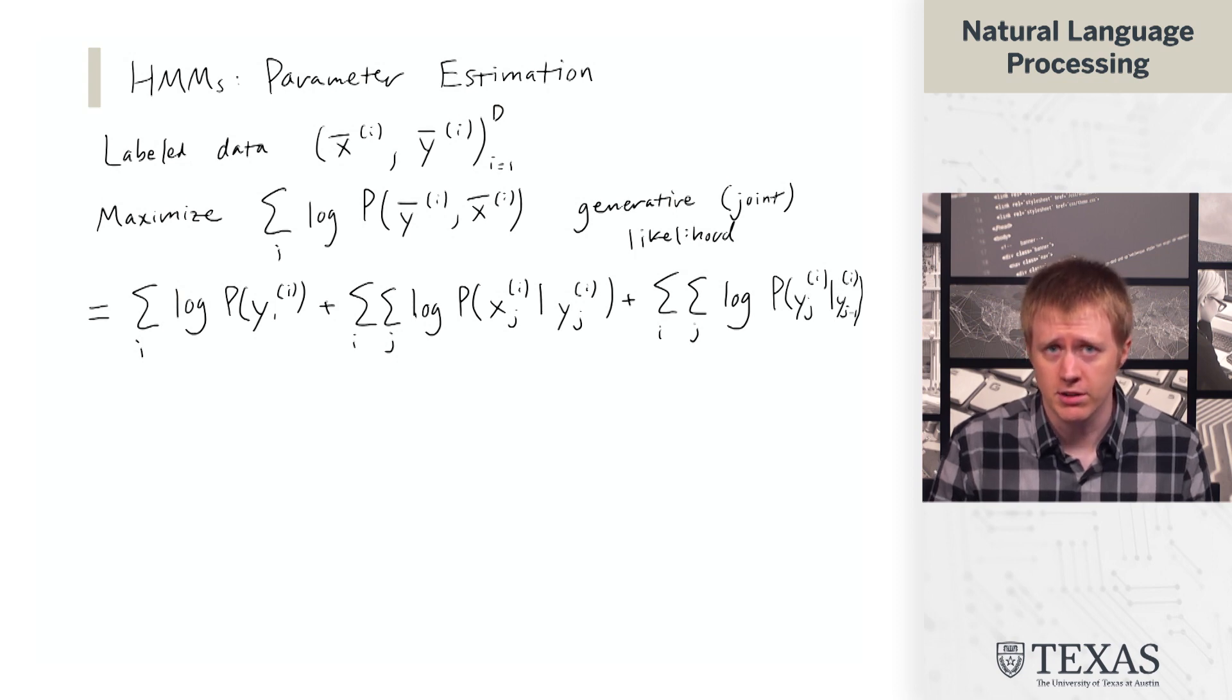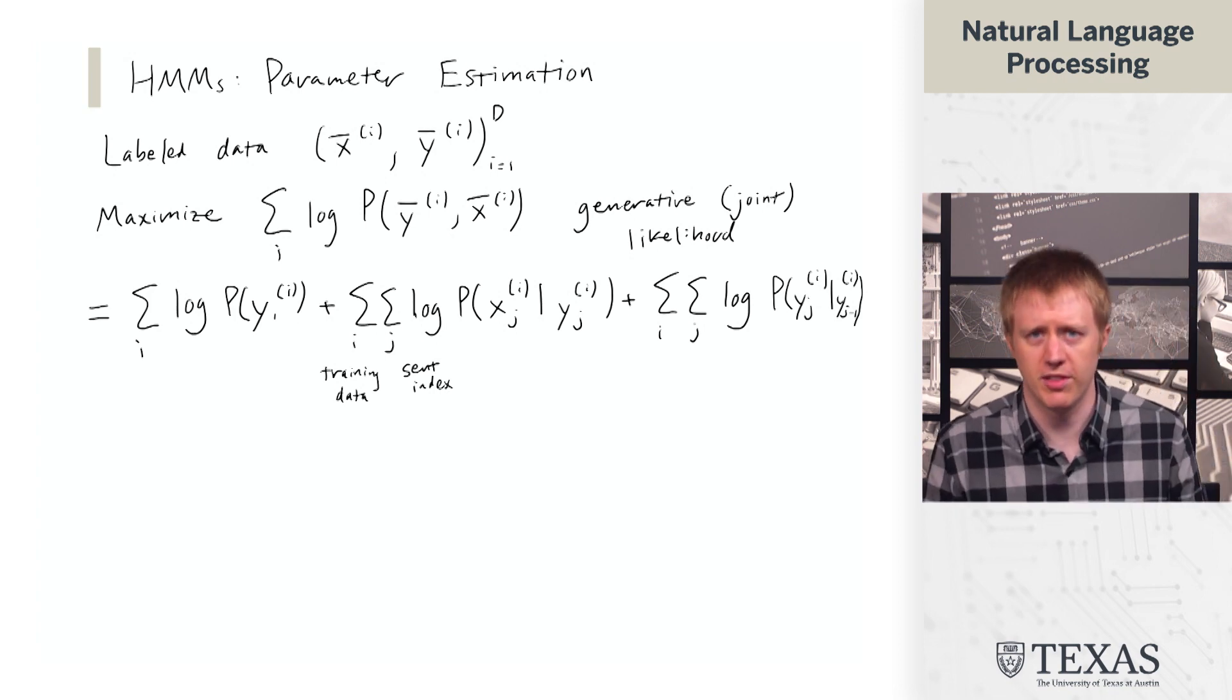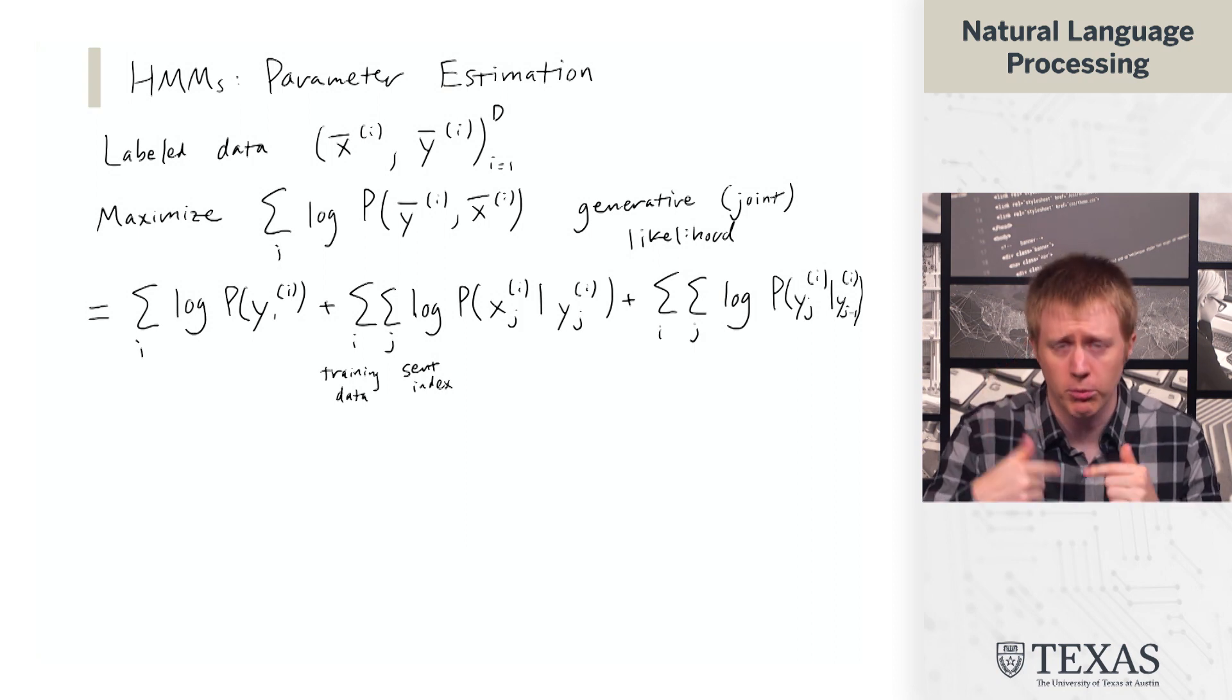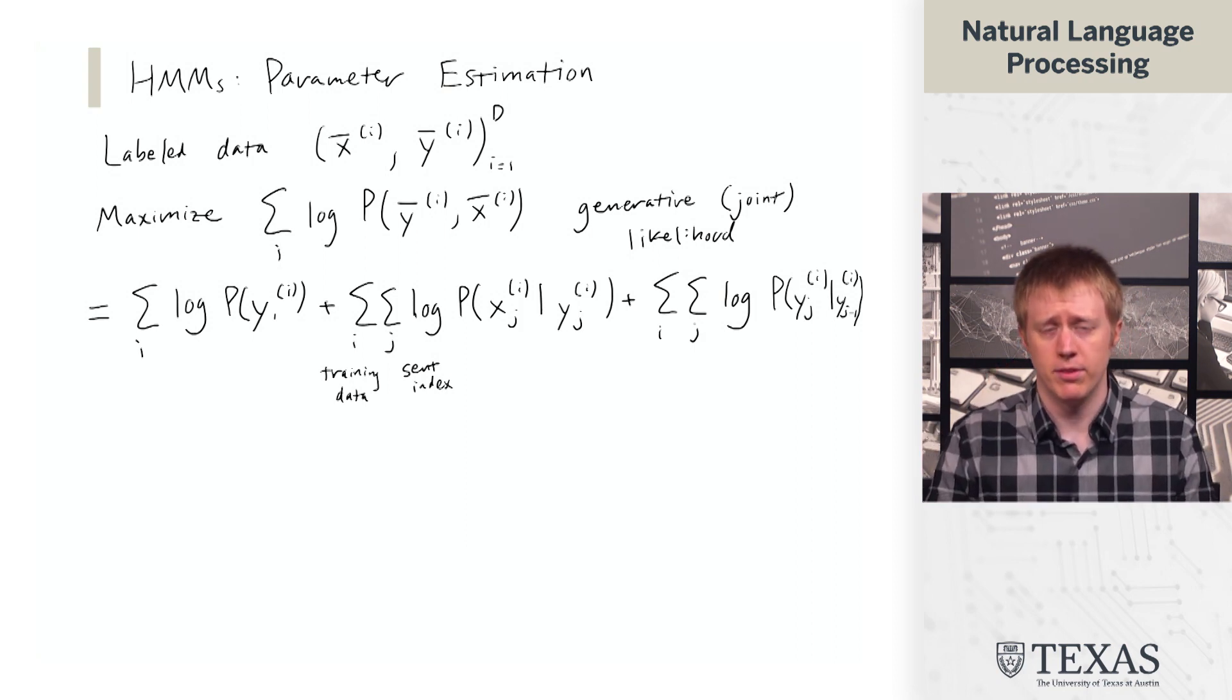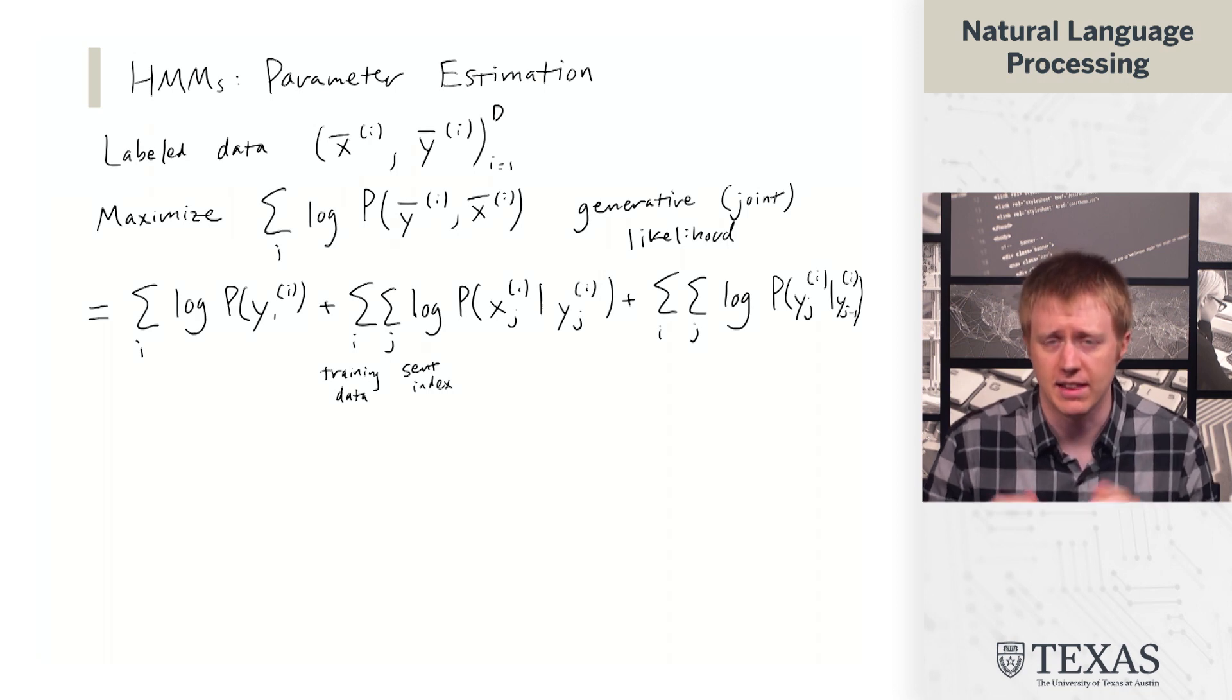And then for the second and third terms, we are looking at a sum over i, which is over the training data, and then sum over j, which is over the sentence, the index, or the position within the sentence. And so it's saying we have to loop over all the sequences and then loop over all the words and accumulate the probability of, in the second case, seeing that x given that y, and in the third case, seeing that transition.